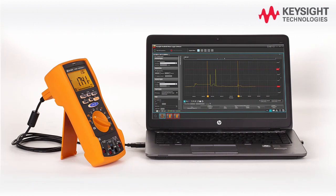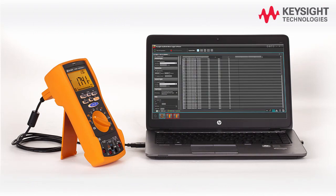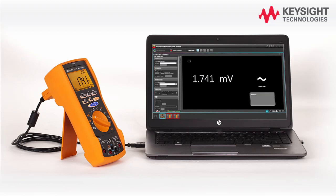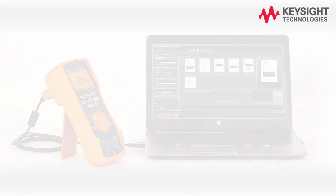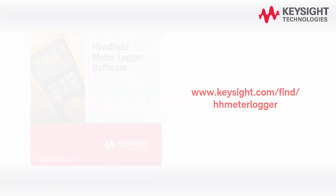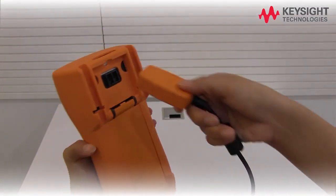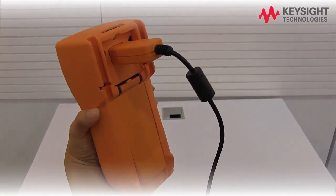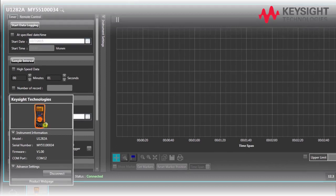The U1281A/U1282A allows you to perform data logging remotely with report generation capability. Before you start, make sure the Keysight Handheld Meter Logger software is installed. Connect your multimeter to the Keysight Handheld Meter Logger using the IR cable. Your tester will connect automatically.